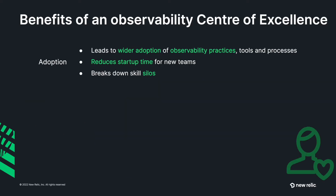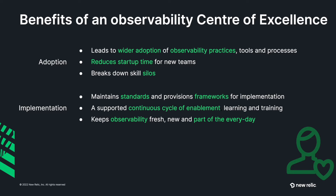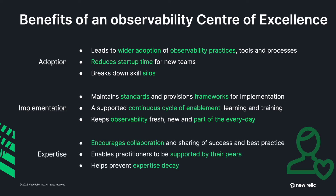So what are the benefits of an observability center of excellence? One area is adoption. A center of excellence leads to wider adoption of the observability practices, tools and processes. It helps reduce the startup time for new teams and individuals and it helps to break down those skill silos. Another benefit is implementation — it helps maintain standards and provision frameworks for implementation across the organization, and provides a supported continuous cycle of enablement, learning and training. Another area of benefit is expertise: a center of excellence encourages collaboration and sharing of success and best practices, helps practitioners support each other, and helps prevent expertise decay.